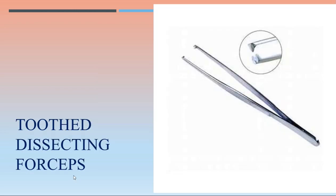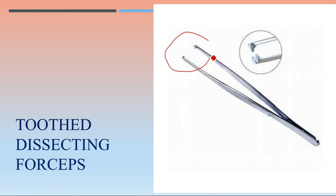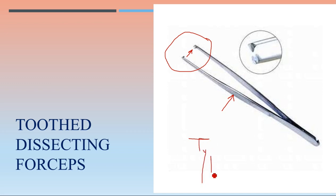Next is toothed dissecting forceps. Focus on the tip — it is used for dissection purposes. When force is applied in one direction, the prong moves in the same direction — so these instruments are type two lever instruments, with force and motion in the same direction.